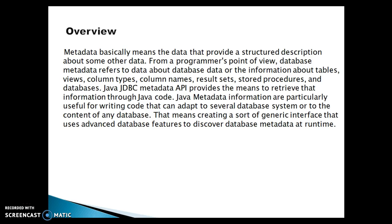The Java JDBC metadata API provides the means to retrieve that information through Java code. Java metadata information is particularly useful for writing code that can adapt to several database systems, or to the content of any database — that means creating a sort of generic interface that uses advanced database features to discover database metadata at runtime.